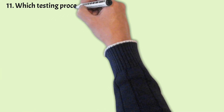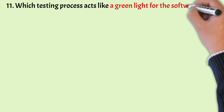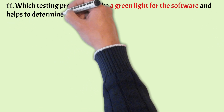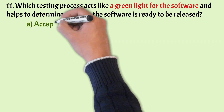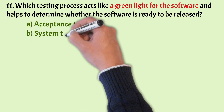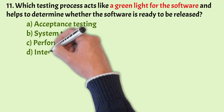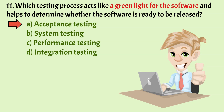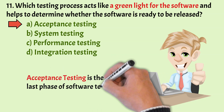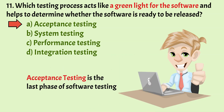Next: Which testing process acts like a green light for the software and helps to determine whether the software is ready to be released? Options: Acceptance Testing, System Testing, Performance Testing, and Integration Testing. The correct option is Option A, Acceptance Testing. Acceptance Testing is the last phase of software testing, performed just before making the system available for actual use. It determines whether the system software has met the requirement specifications.